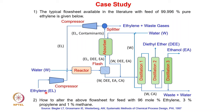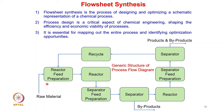Mapping the ethanol example to the generic flow diagram: ethylene is compressed and mixed with water as the reactor feed preparation; the mixture is charged to the reactor; then a heat exchanger and flash drum serve as separator feed preparation units; and the subsequent distillation units are the separators from which products are taken out and unreacted ethylene and water are recycled back.